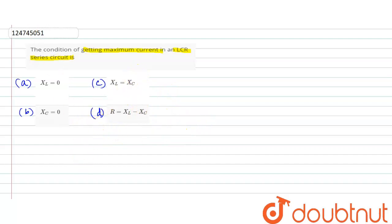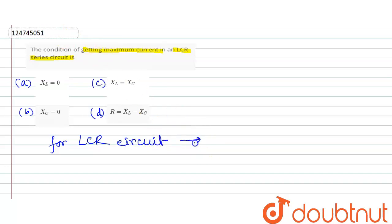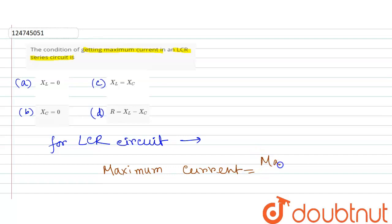Then we have a formula. For the LCR circuit, maximum current is equal to maximum voltage divided by impedance.